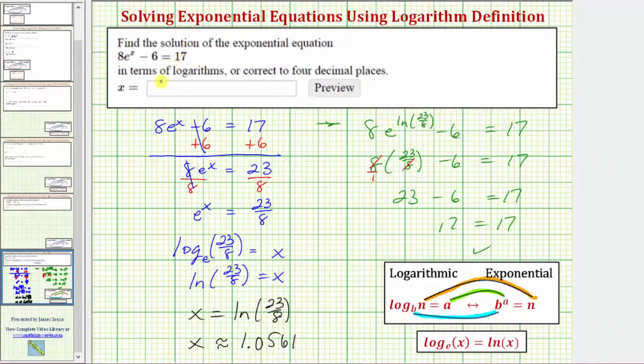So the exact solution is ln(23/8), or as a decimal approximation, approximately 1.0561. The directions will take either the exact solution or the approximate solution to four decimal places. I hope you found this helpful.